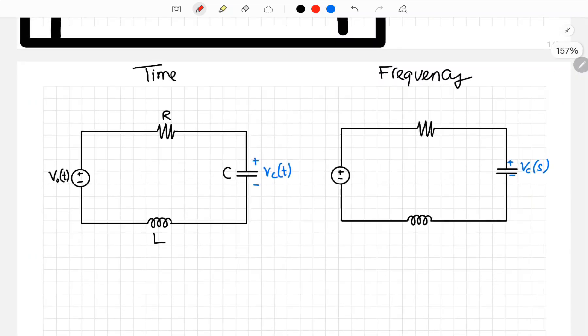Here in time domain, we have this electrical system. A voltage source V0 of T, a resistor with value R, a capacitor with value C, and an inductor with value L. The input is V0 of T and the output is Vc as the voltage across capacitor C.